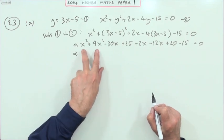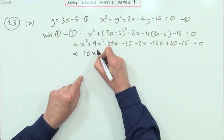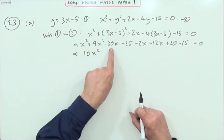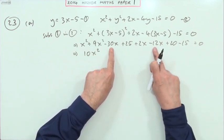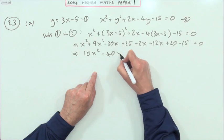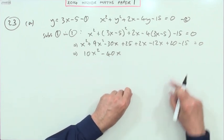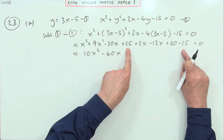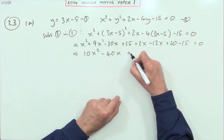Then finally gather up all the different types of terms. I've got 10 for the x squared, the x is negative 30 and negative 10, that's negative 40. The numbers I've got, a 25, a minus 50, so that's a 10, and a 20 makes 30.